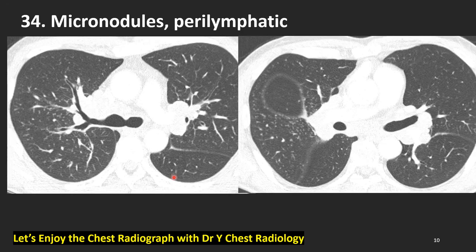Axial thin section lung window setting CT — two images of the same patient. What do we see? Bronchovascular bundle thickening and many micronodules. Micronodules with perilymphatic dominant pattern — peribronchovascular micronodules. Also fissure micronodules along the minor fissure and major fissure. Left major fissure also shows micronodules. Perilymphatic dominant micronodules — very characteristic of sarcoidosis.